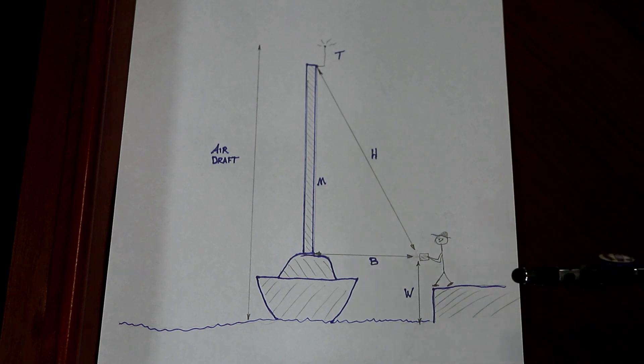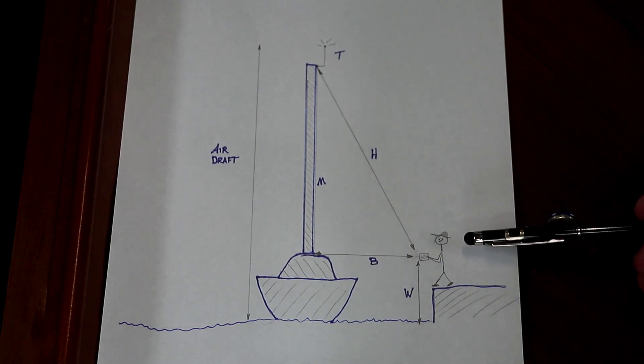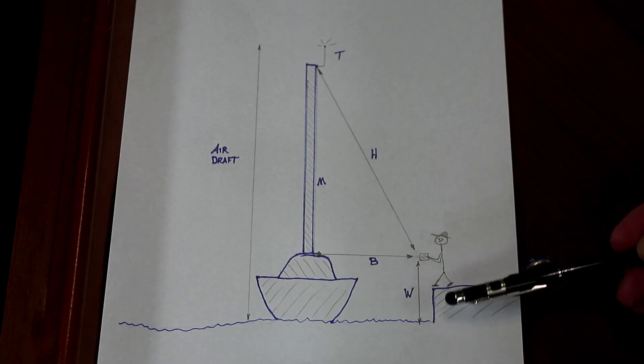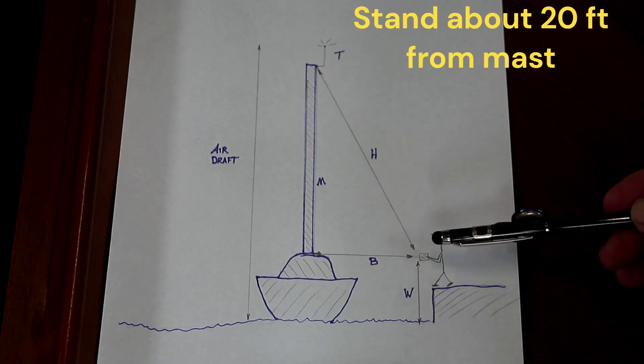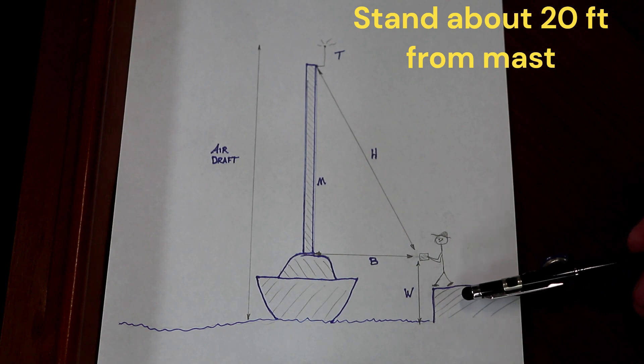To illustrate the use of the tape measure and the laser measuring tool, we have a diagram here with Mr. Stickman standing on the dock. By the way, the dock floats with the tide, so it's always going to be the same distance above the water.